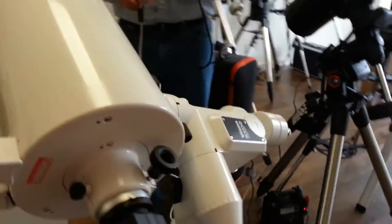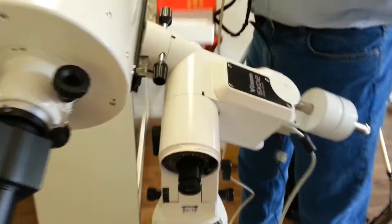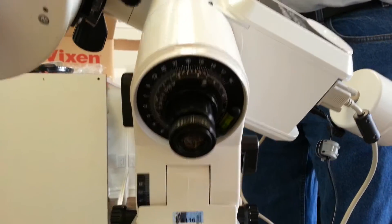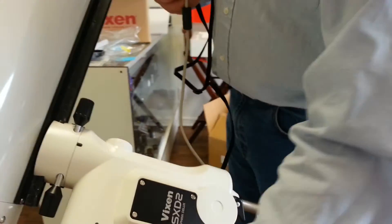And now this is coming with the deluxe polar finder scope also. Is that true? It's just in the back. It's an illuminated polar scope. Right. And it has the counterweight shaft that slides up inside.